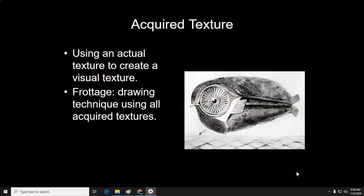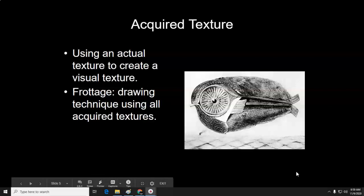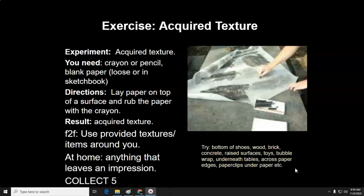Acquired texture is when you use an actual texture to create a visual texture. Frottage is a drawing technique using acquired textures. This is an example of frottage, and you're going to experiment with how to get acquired textures. For your first exercise today, you'll need a crayon or pencil and blank paper. All you do is put your paper on top of a surface and rub the paper with the crayon or pencil — it lifts up the texture of that surface.